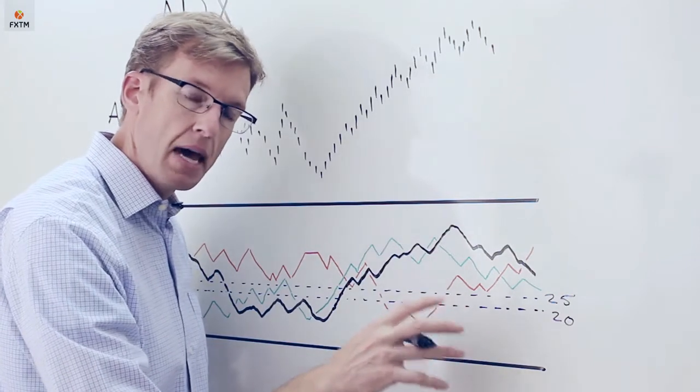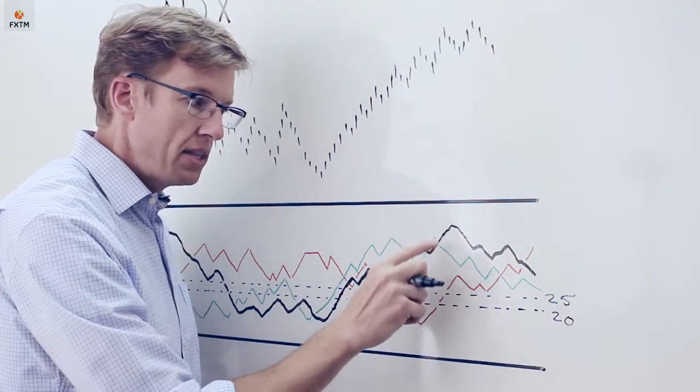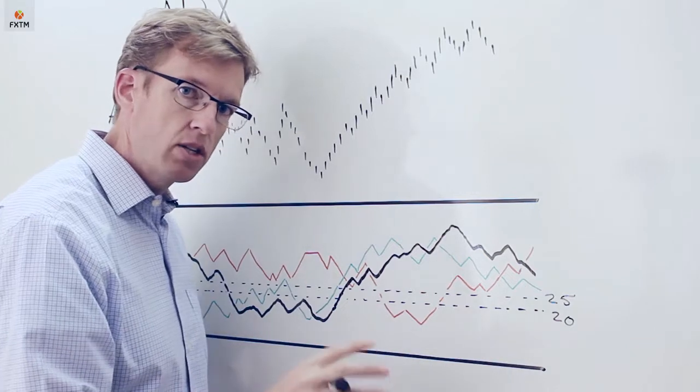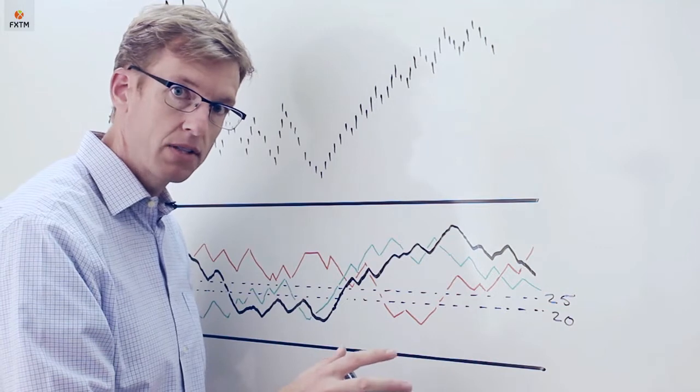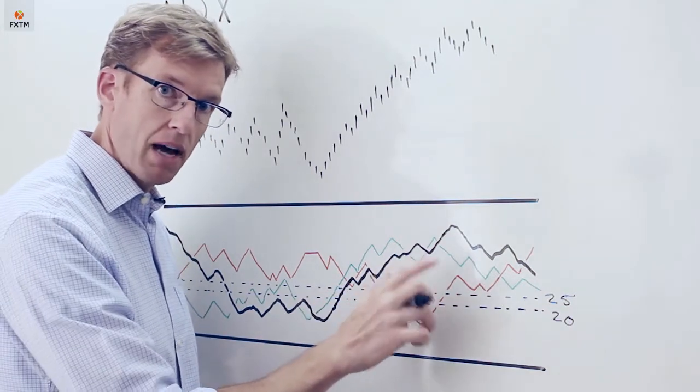We want to put a strong trend in our favor. But it is important to remember that the ADX line itself is trend direction independent. It can be above 25 if it's a bearish trend. It can be above 25 if it's a bullish trend. It doesn't matter at all.